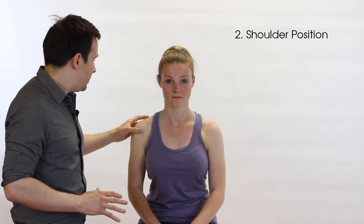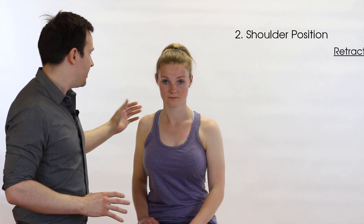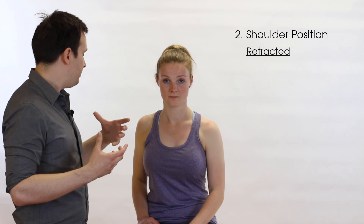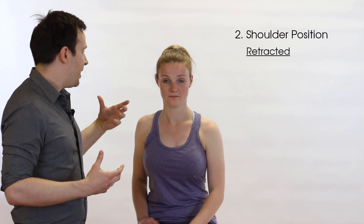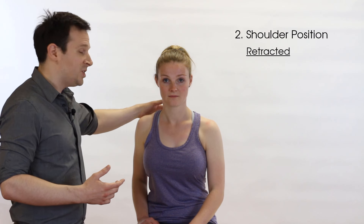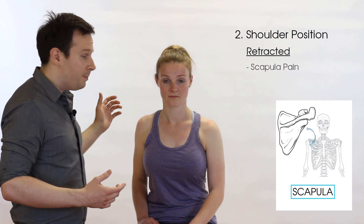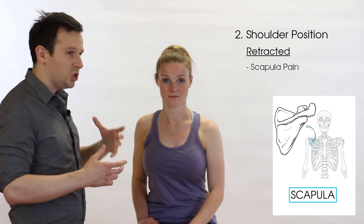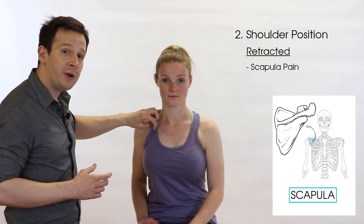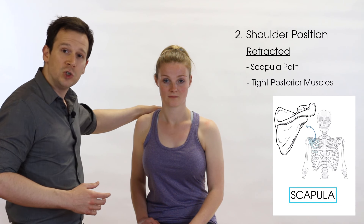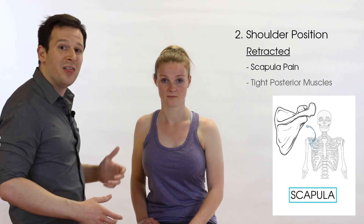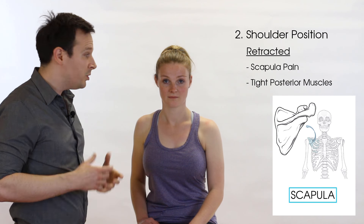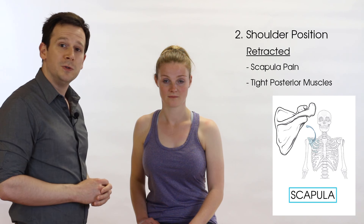More rarely, if someone is excessively retracted, that's more likely to be associated with pain in and around the scapula. But just as a short and tight pec minor can cause problems anteriorly, short and tight posterior musculature can cause an imbalance as you try to move the shoulder, so that could be a clue too.